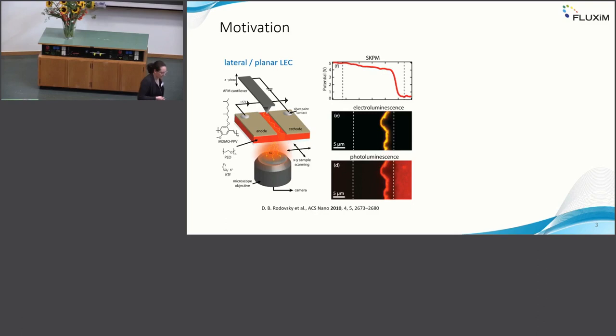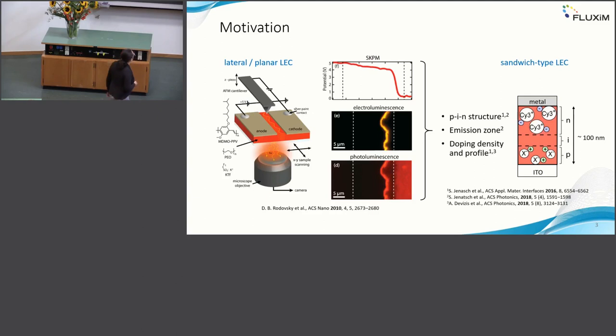Well, this is not easy or straightforward if you have lateral devices. In the beginning of LEC work, there were a lot of these lateral devices with a broad inter-electrode distance of approximately five micrometers up to one millimeter, and then you can simply investigate where your emission zone is and where your doped layers are by scanning Kelvin probe microscopy. But this is much more tricky if you have a sandwich type device with thickness of 100 to maybe 1000 nanometers.